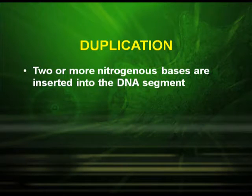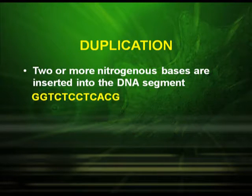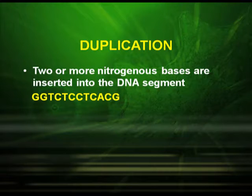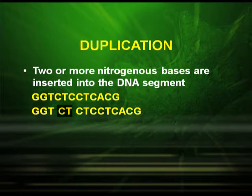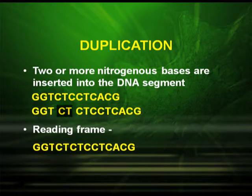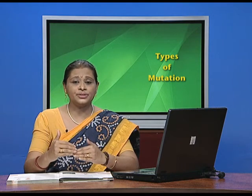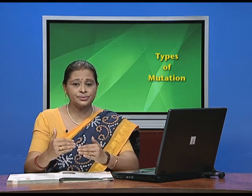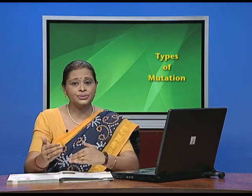The third type is duplication, where two or more nitrogenous bases are inserted into the DNA segment. Let us write a hypothetical sequence: G, G, T, C, T, C, C, T, C, A, C, G. Here, you are duplicating C, T. So the reading frame becomes G, G, T, C, T, C, T, C, C, C, A, C, G — again the reading frame changes, leading to an abnormal genotype and phenotype.